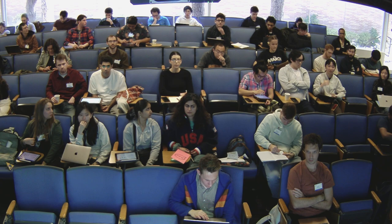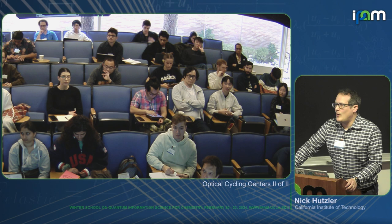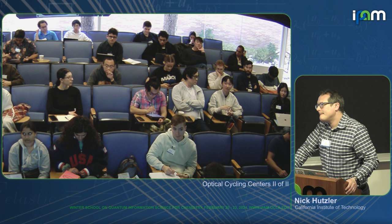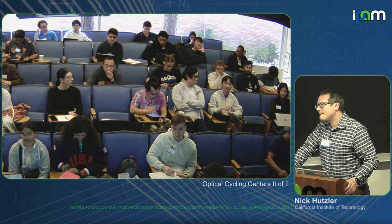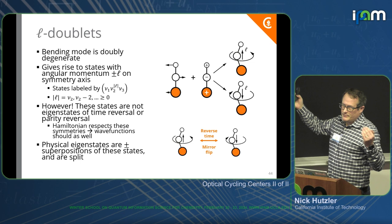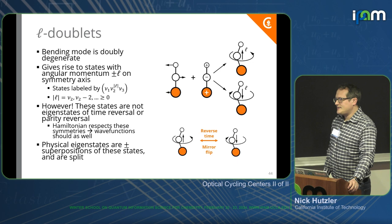Q: In the notation, what is nu2? Is it a number? A: Yes, it's an integer that counts the vibrational quanta in the bending mode — it goes from 0 to some number before the molecule becomes unbound. Experimentally, you can tell which state the molecule is in because nu2=0, 1, 2, etc. are split by vibrational energies, so you do energy-resolved spectroscopy.